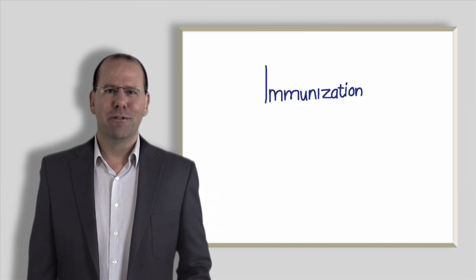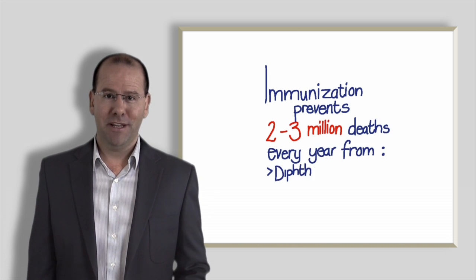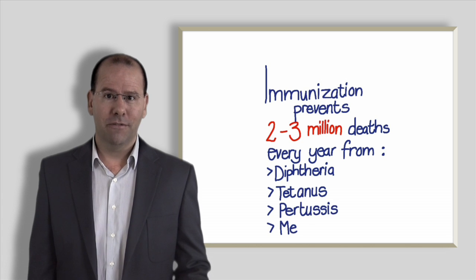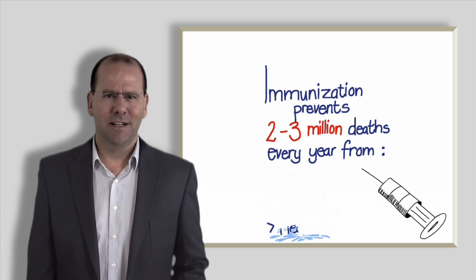Fact number one. Immunization prevents between two and three million deaths every year from diphtheria, tetanus, pertussis, which is whooping cough, and measles. It's one of the most successful and cost-effective public health interventions.